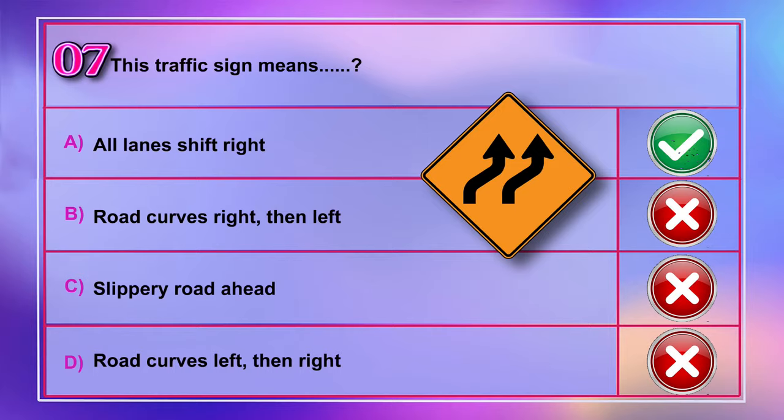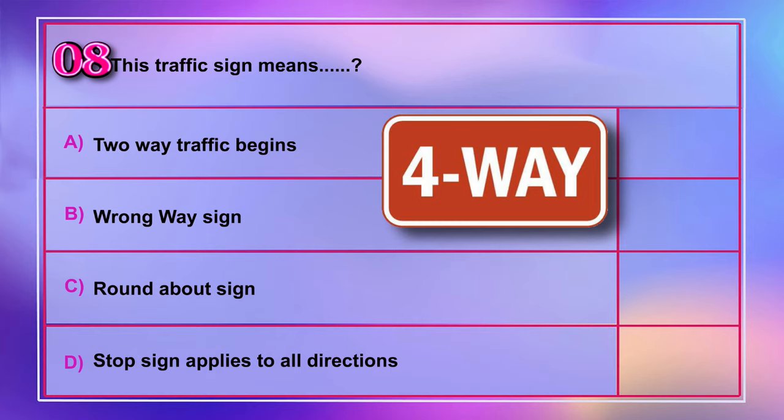Question number 8: This traffic sign means A) two-way traffic begins, B) wrong way sign, C) roundabout sign, D) stop sign applies to all directions. Correct answer is D: stop sign applies to all directions.